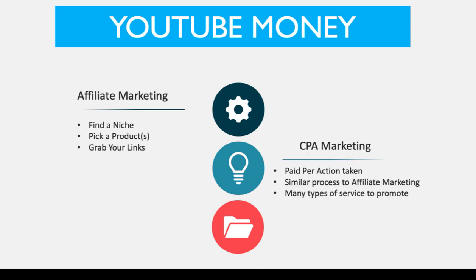The second one is something called CPA marketing, which is cost per action marketing. You're paid per action taken by somebody who actually clicks through your link. You can do this for multiple products or services that are trying to get leads. What you're doing is introducing that particular service to someone and they might have to fill in a form, phone a phone number — there are various actions they may need to do. Once they do that, you get paid a commission. It's a similar process to affiliate marketing, but there are many other types of services to promote — things like insurance services, solicitor or lawyer services, all sorts of different things.